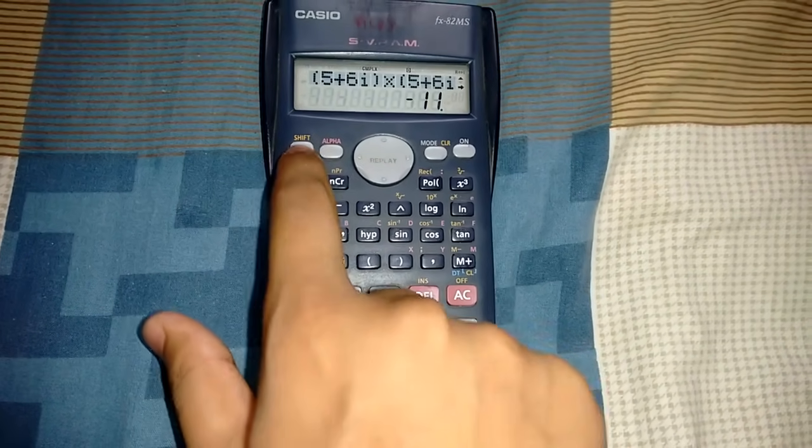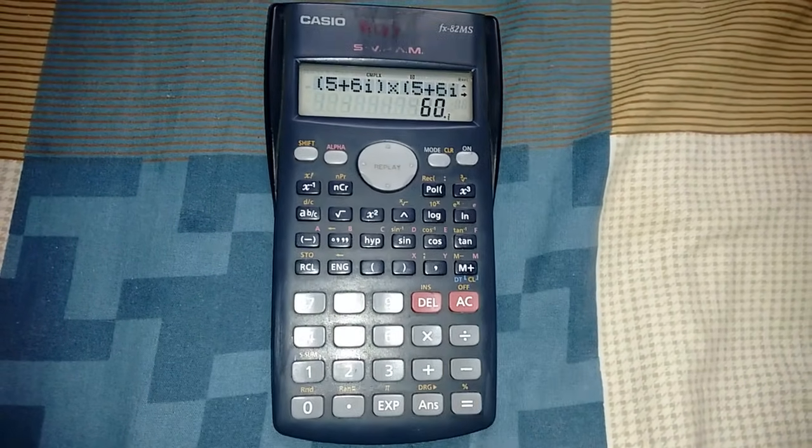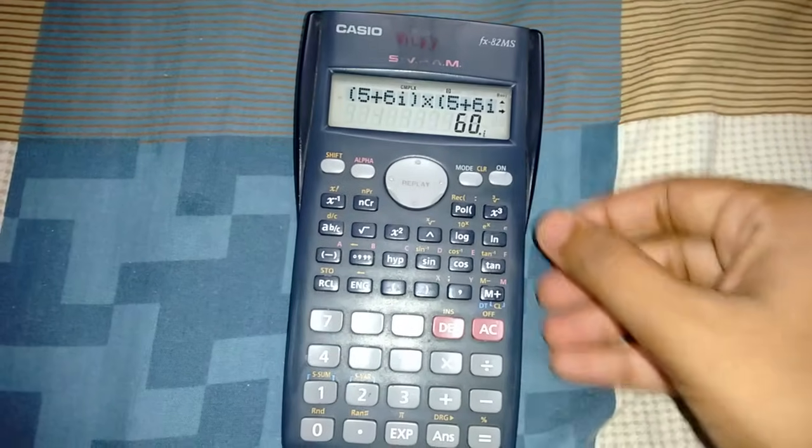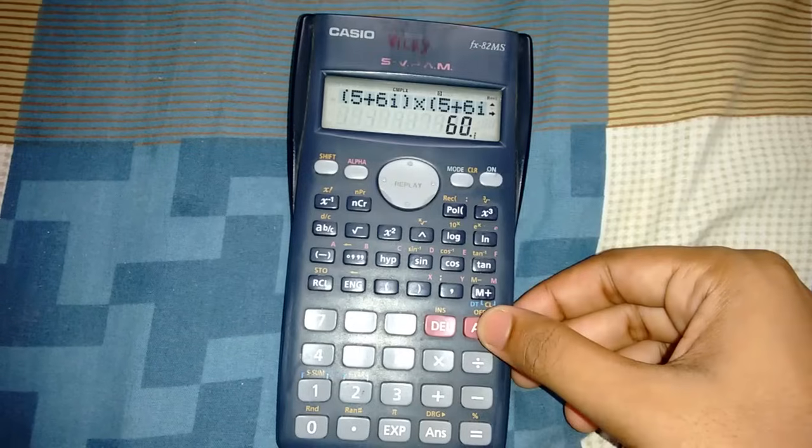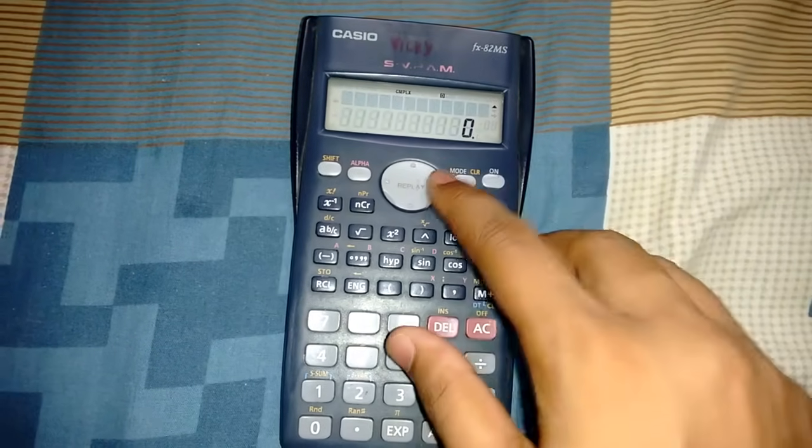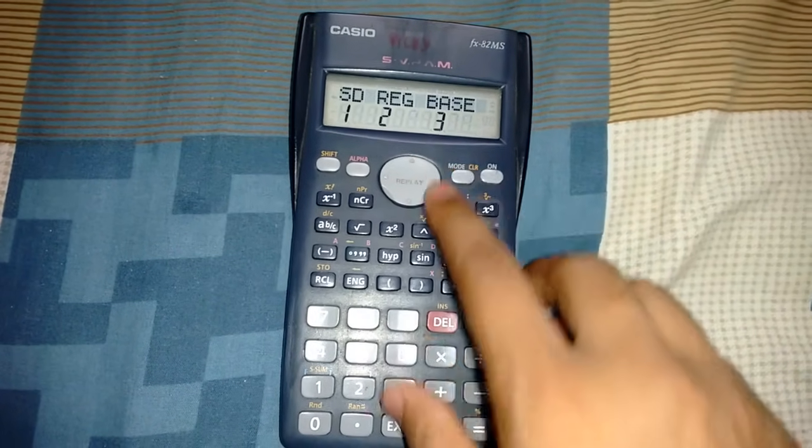Now for seeing the imaginary part, press Shift then equals. It shows 60 iota, which is correct. Now let me show you another function: base.